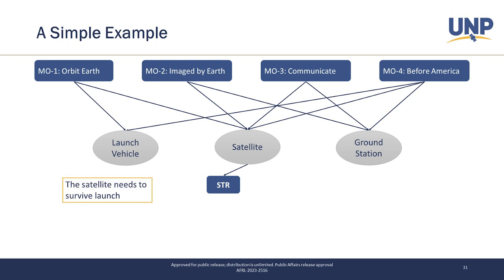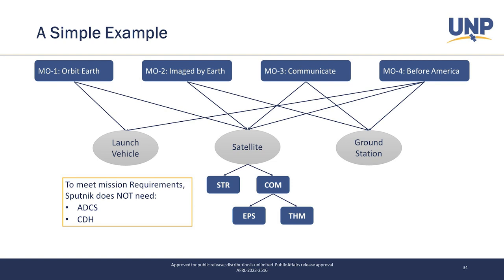The next level below that is our subsystem-level requirements, which should flow down from the mission and system level. The satellite needs to survive launch, so it needs a structure. It needs to communicate with the ground, so something to — a comm system on it. That comm system will then imply we need an EPS and some thermal regulation. All these things are getting flowed down to lower and lower level requirements that all tie back to the need that came before them. One thing to be careful of: don't just add things because we're used to having them. Just because most satellites have ADCS and CDH does not mean every satellite must. In Sputnik's case, the comm system was just beeping — we could toggle it on and off within the comm system itself. We don't need a complicated CDH or an actual ADCS for a tumbling satellite.